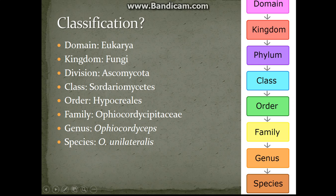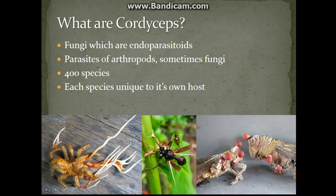This parasite is actually a type of fungus, and if you took Diversity of Life 2 you might remember learning about the division it's classified under, known as Ascomycota. Cordyceps themselves are all endoparasitoids, which means they feed on their host from the inside out and always kill their host because of it. They are parasitoids of mainly insects and other arthropods, and sometimes fungi, but never parasitoids of humans.